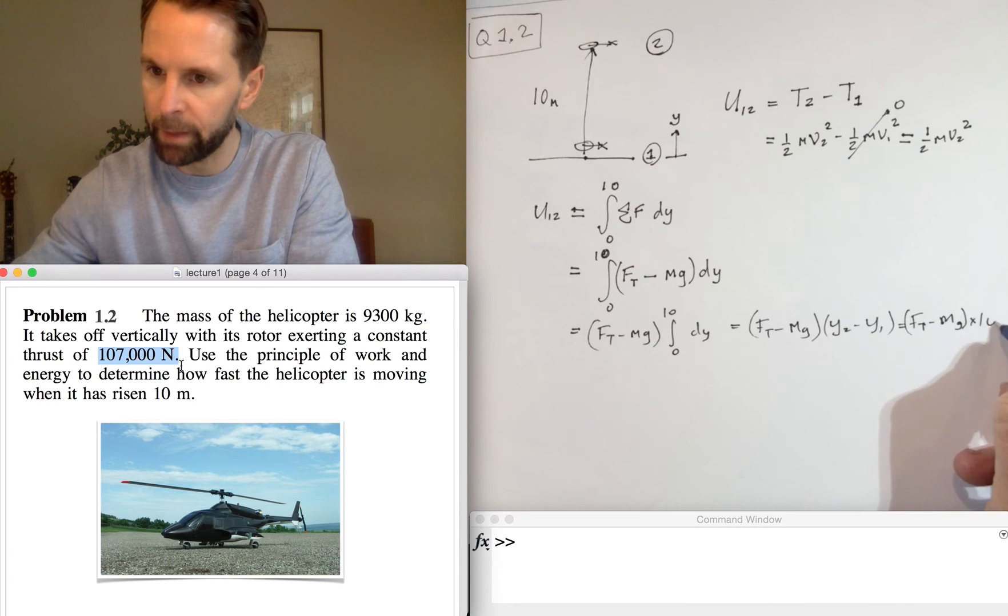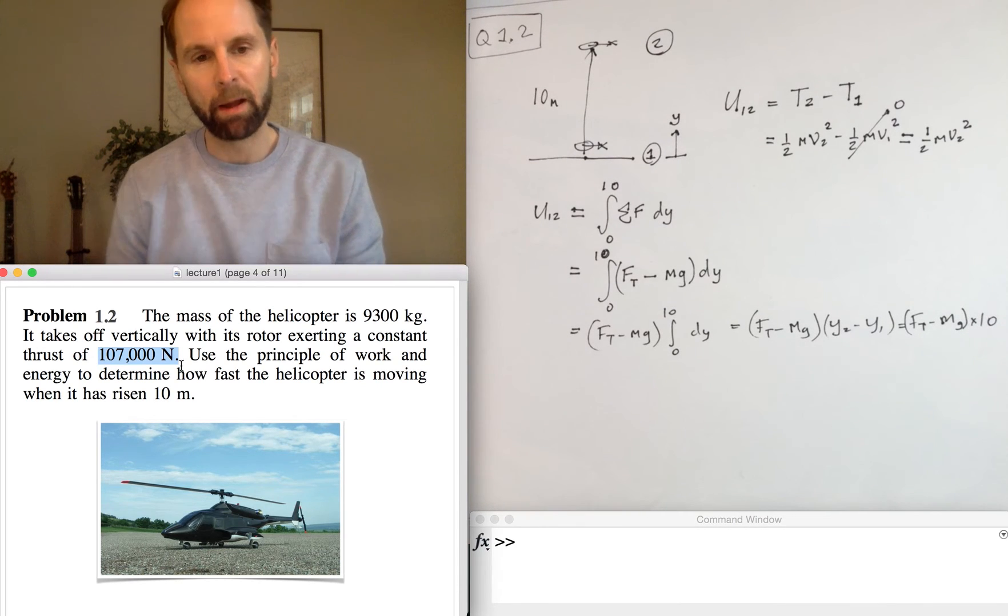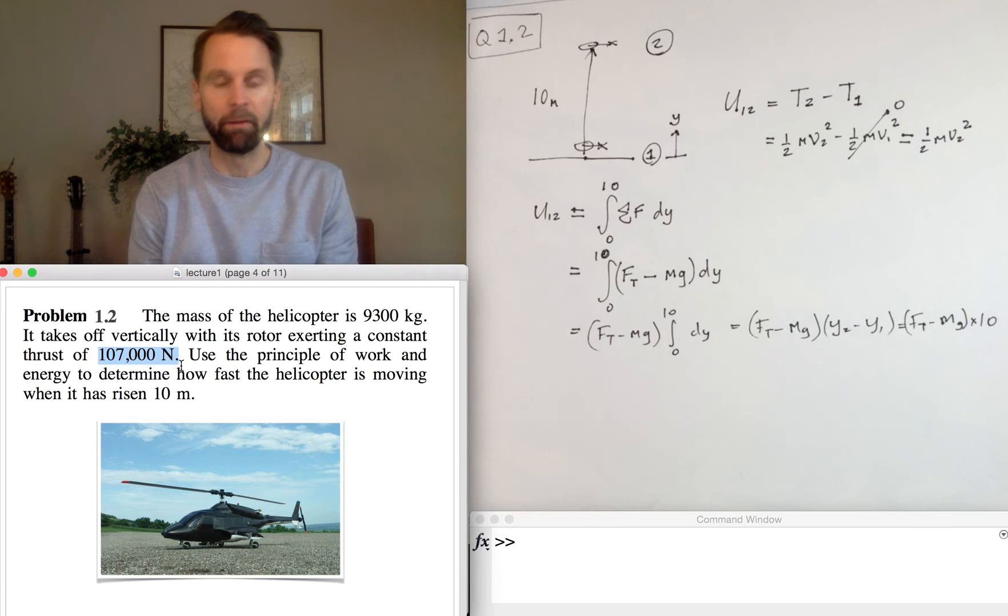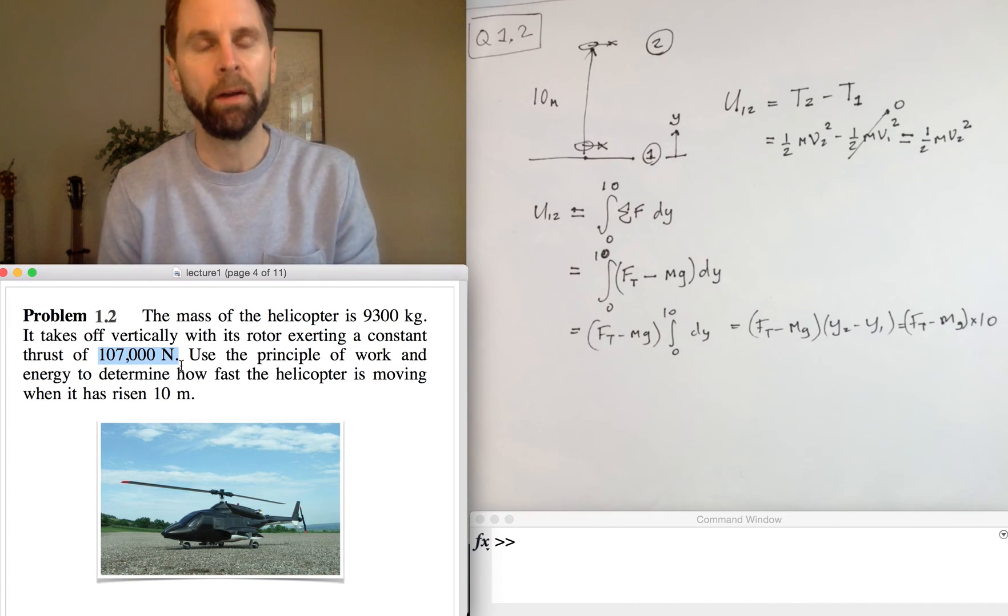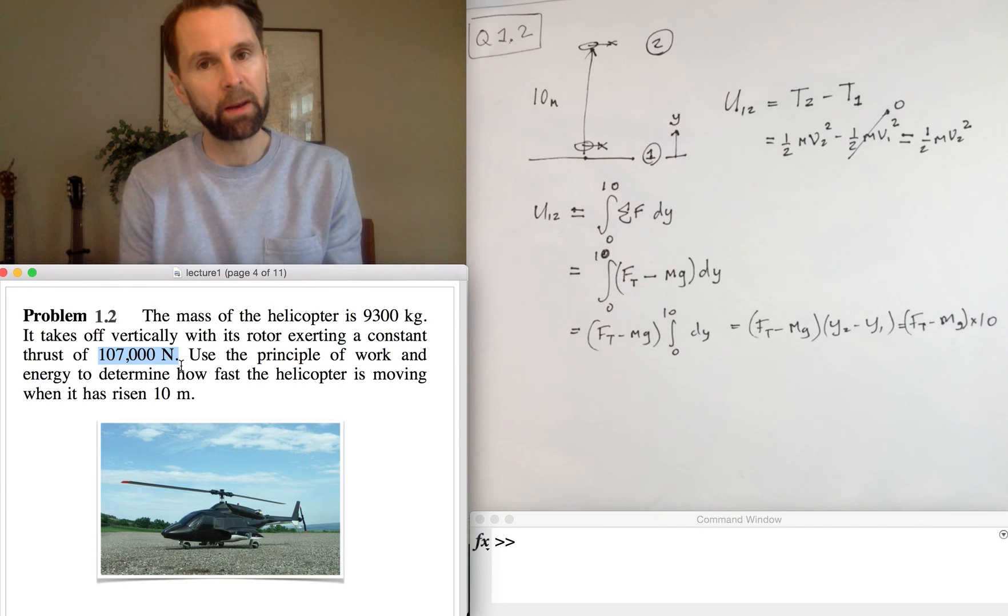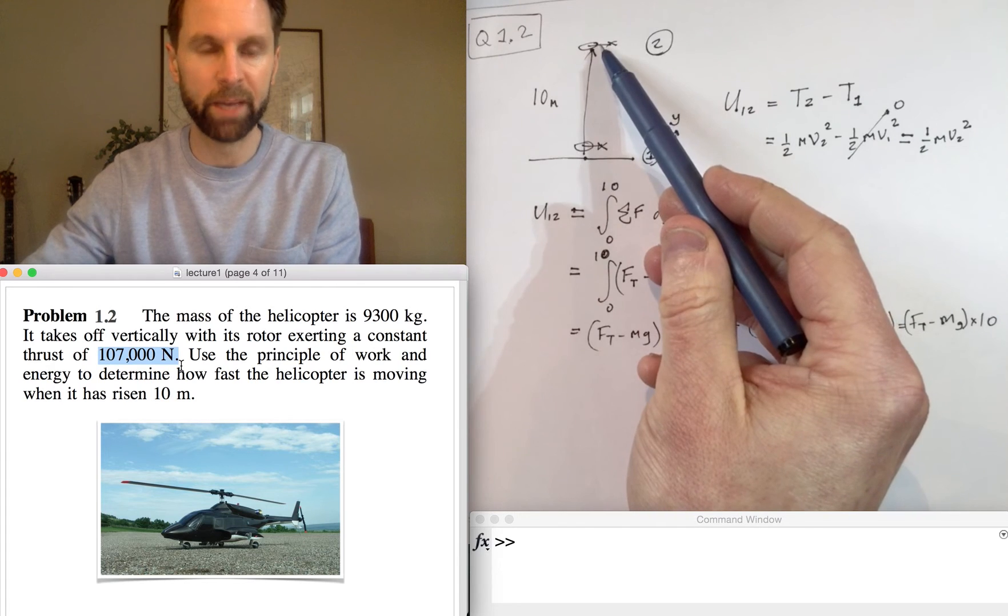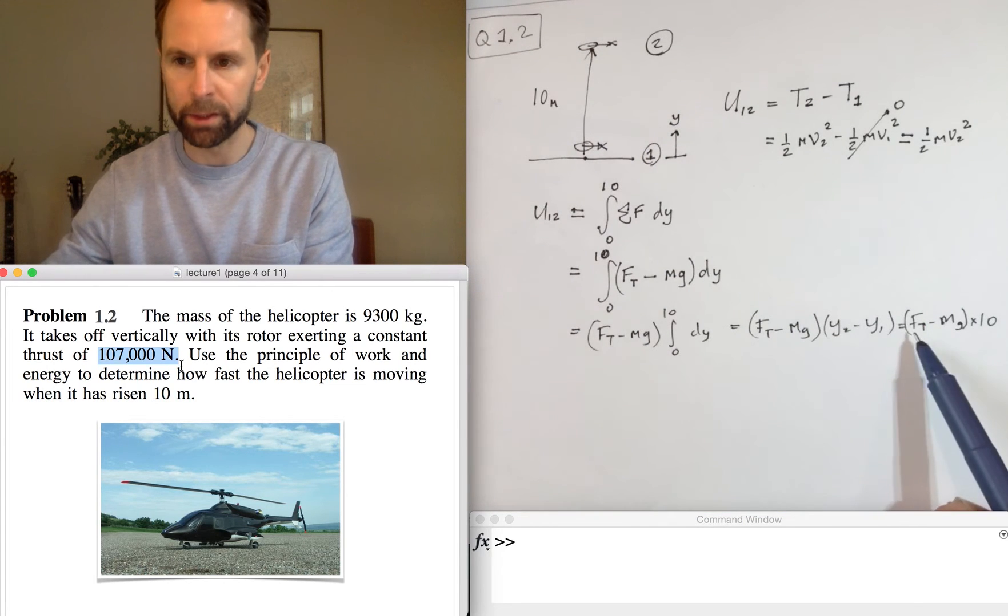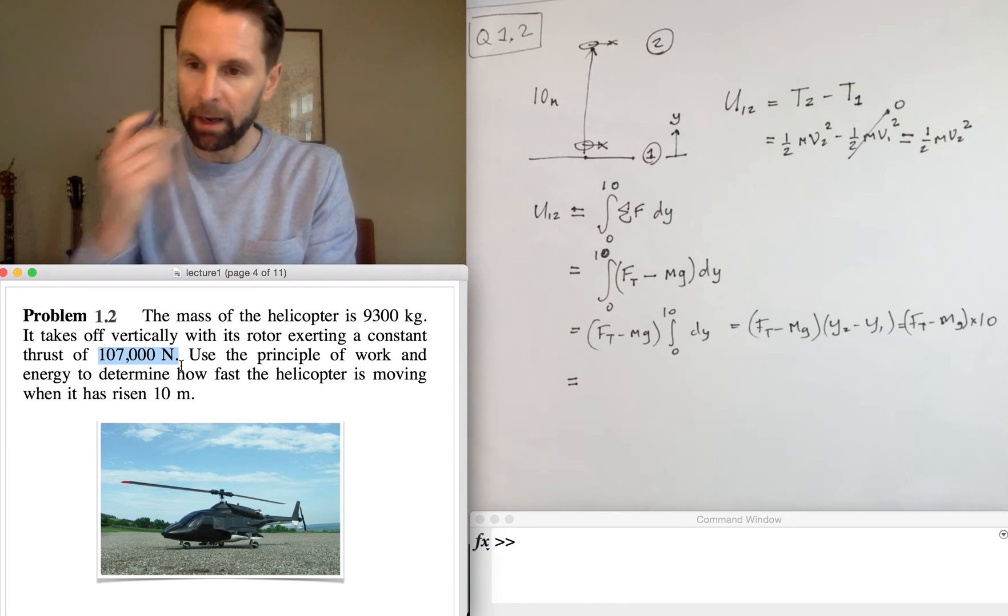So that was a very long-winded way of basically recognizing the fact that the forces are constant with respect to the position, and therefore the work done is just the resultant force times the distance, so it's the resultant force times 10 meters.